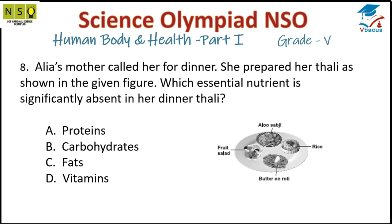Question number eight: Alia's thali contains alu bhaji (carbohydrates), rice (carbohydrates), butter on roti (carbohydrates and fat), and fruit salad (vitamins). Dal is not there, which means protein is missing from the thali. So option A is correct.